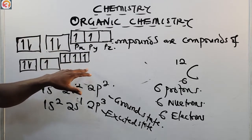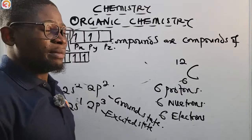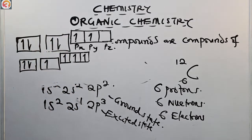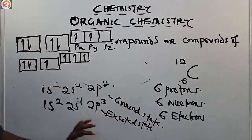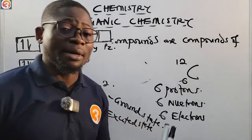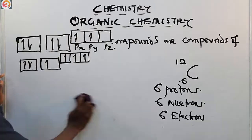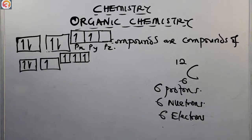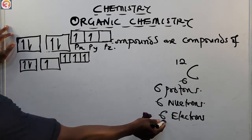The excited state is very unstable, so the promoted electron collapses back to the s-orbital, releasing a large amount of electromagnetic radiation. Make sure you know both the ground state (1s², 2s², 2p²) and excited state (1s², 2s¹, 2p³) electronic configurations of carbon.